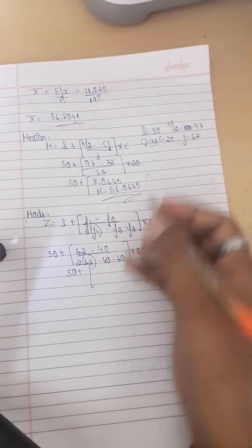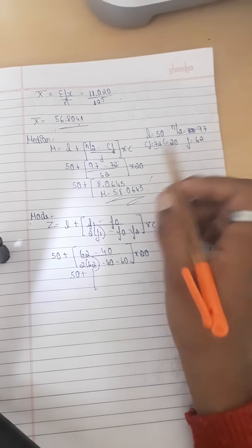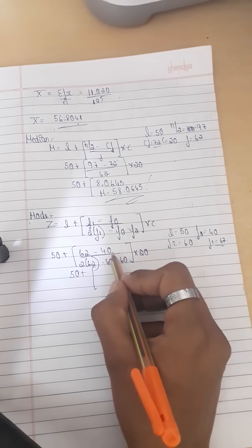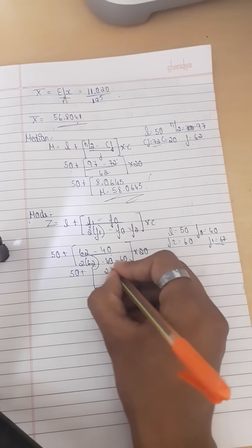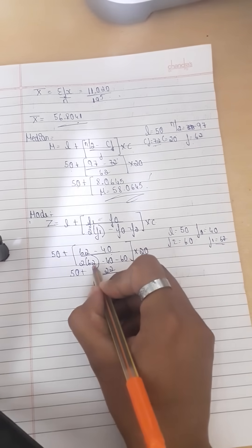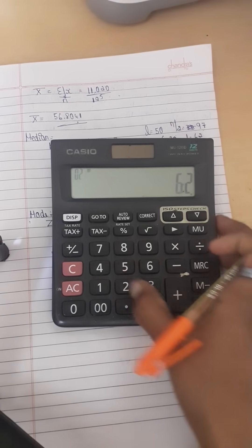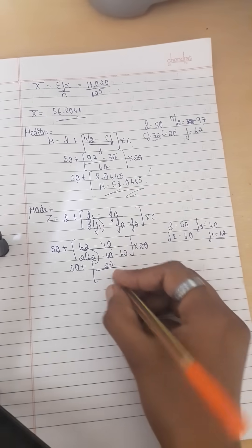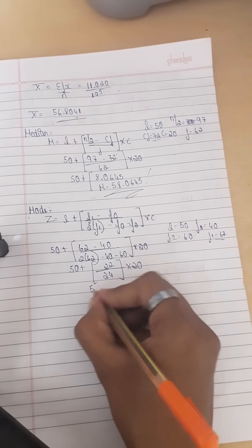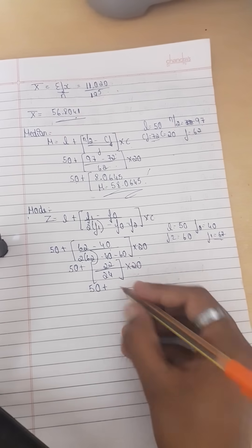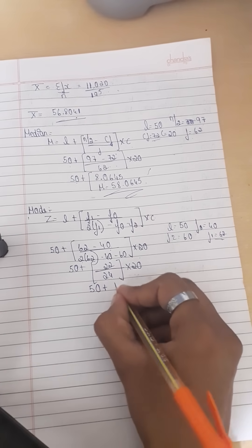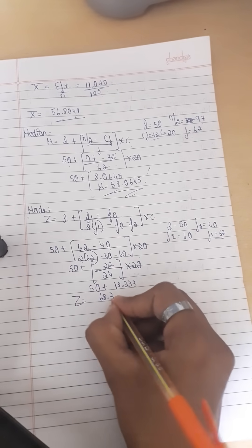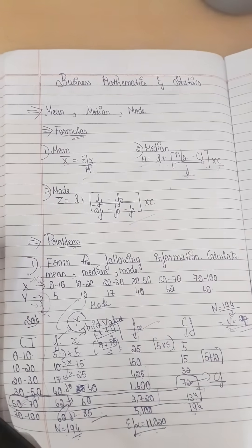Calculating: 62 minus 40 is 22. Then 2 into 62 is 124, and 124 minus 40 minus 60 is 24. So we have 22 divided by 24, into 20. That gives 18.333. Finally, mode equals 50 plus 18.333, which equals 68.333. This is the mode, and this is the final answer for business mathematics and statistics.